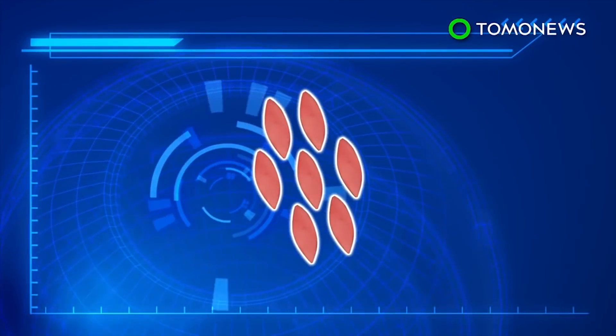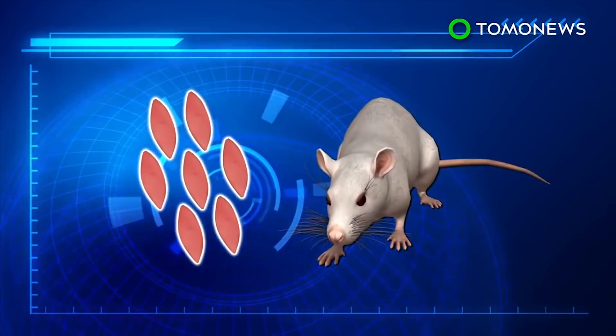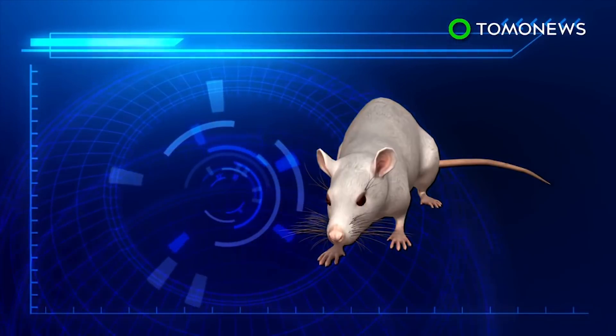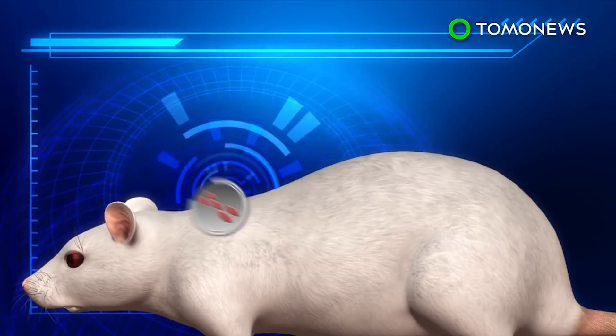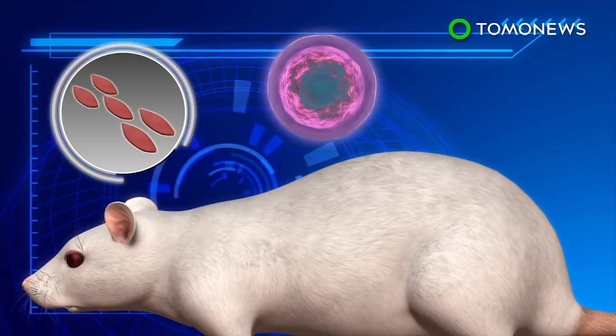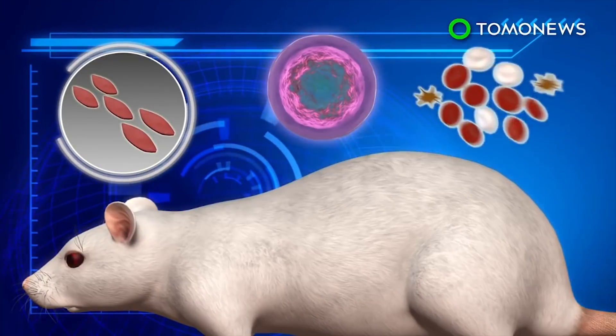These were injected with special proteins called transcription factors, then transplanted into mice. Weeks later, the cells had multiplied, and in some cases formed a wide range of human blood cells in the mice's bodies.